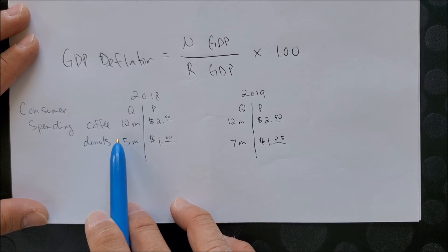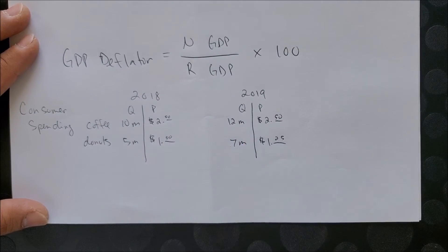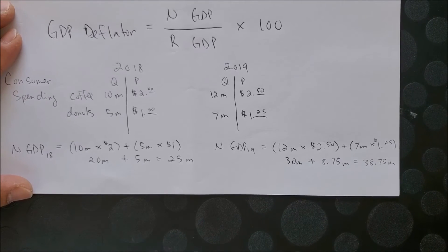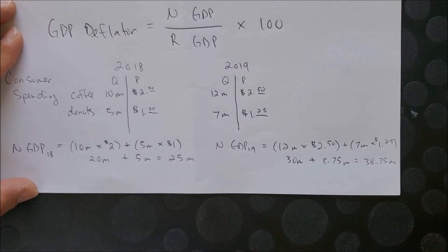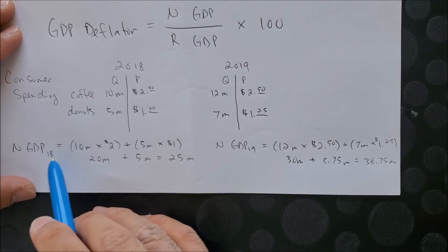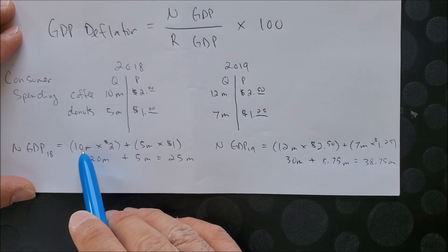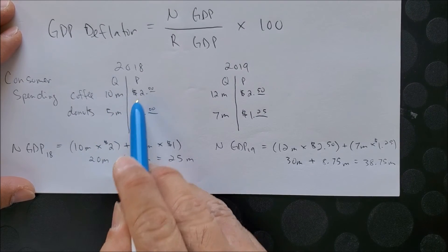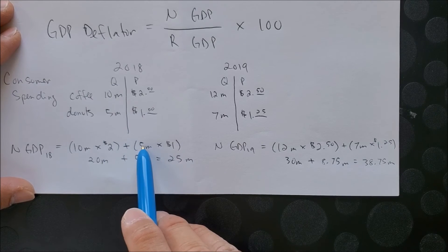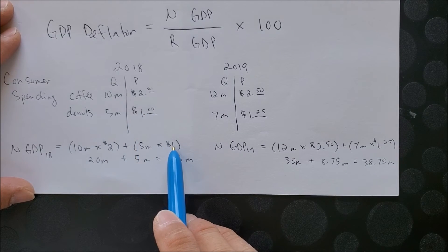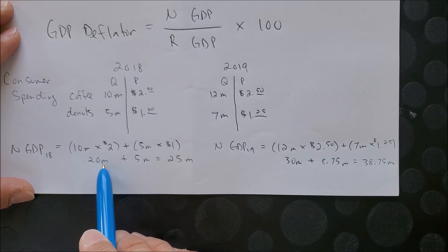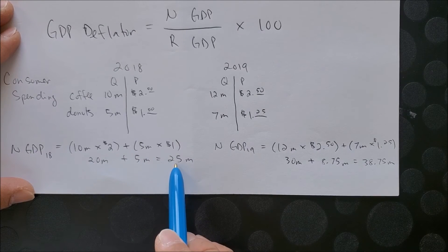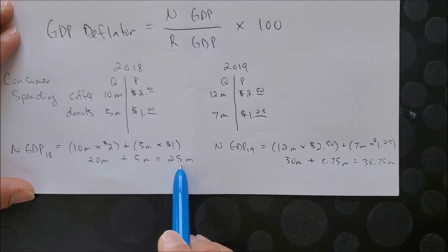After doing the calculation, we have nominal GDP 2018: 10 million coffee times $2 plus 5 million doughnuts times $1. We get $20 million for coffee plus $5 million for doughnuts to get a total of $25 million, and that's the nominal GDP for 2018.